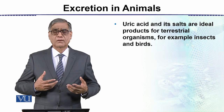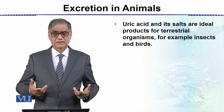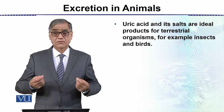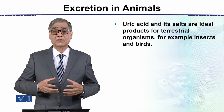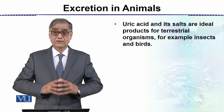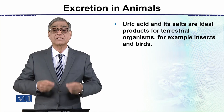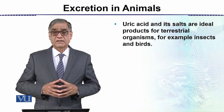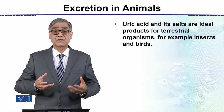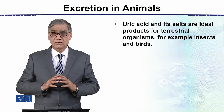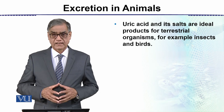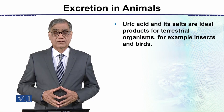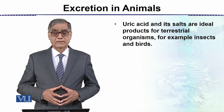Insects, for example, are rarely seen drinking water — many live in grains and do not take in water as such. Instead they use metabolic water, which is reused internally. Similarly, many birds drink very little water, and this is why they produce uric acid. Their droppings contain uric acid in crystalline form. This concludes the introduction to excretion in animals.